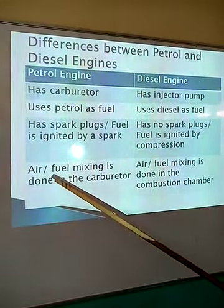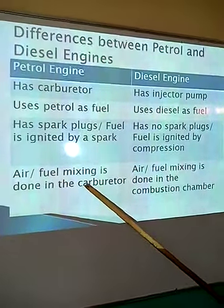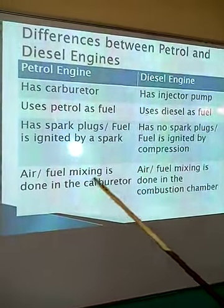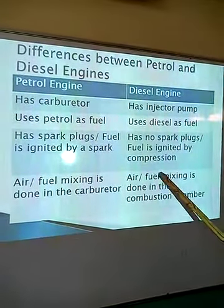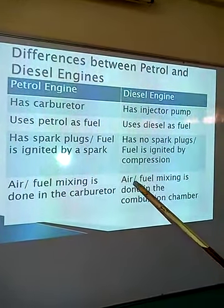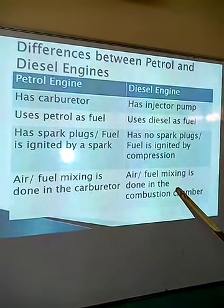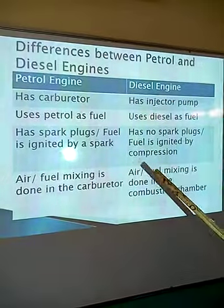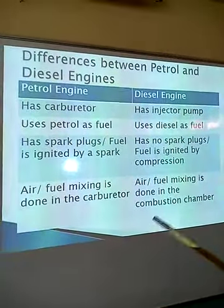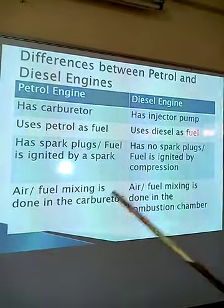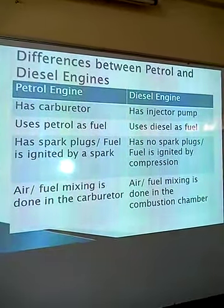The fourth difference is that air-fuel mixing is done in the carburetor in petrol engines. The air and the fuel meet at the carburetor and are mixed in correct proportions. In diesel engines, the air and the fuel meet only in the combustion chamber. So for petrol engines the air and fuel meet before entering the combustion chamber, but for diesel engines they only meet inside the combustion chamber.